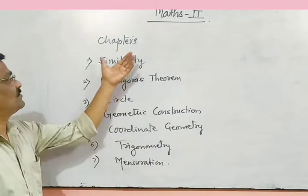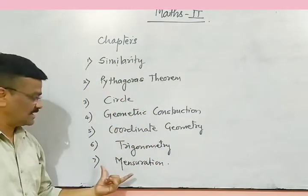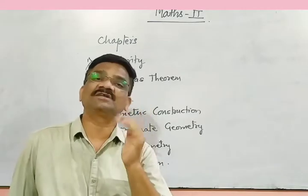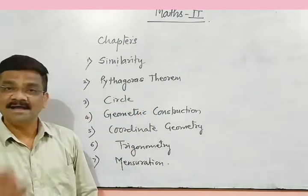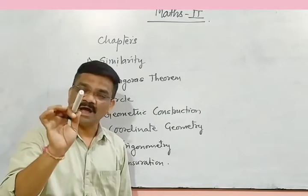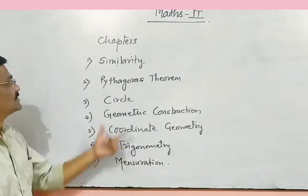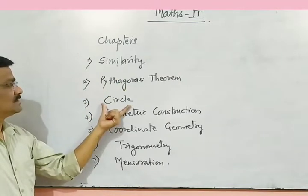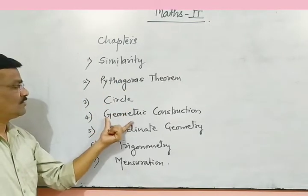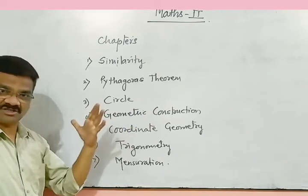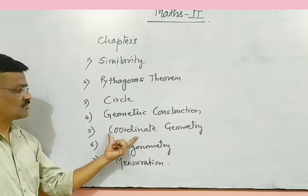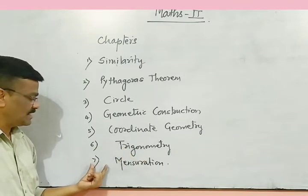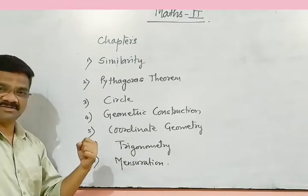You have seven chapters in all. In Maths 1 (Algebra) you have six chapters, but in Maths 2 you have seven chapters. The first chapter is Similarity, second is Pythagoras Theorem, third is Circle, fourth is Geometric Construction, fifth is Coordinate Geometry, sixth is Trigonometry, and the seventh is Mensuration.